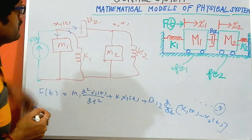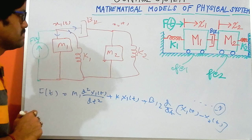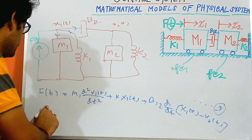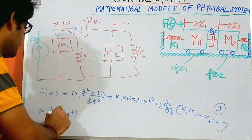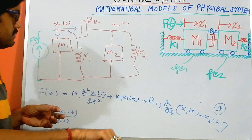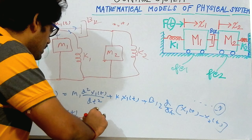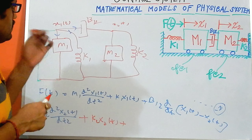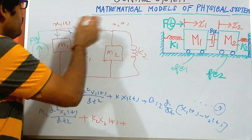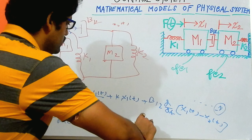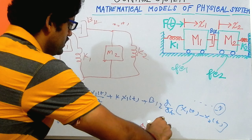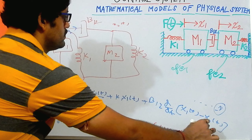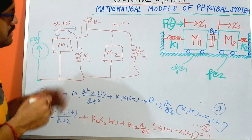Applying the same procedure, at node x2 I have got the equation. The equation is: m2 times d²x2t/dt² plus k2·x2t, and in between the b12, I have got b12 times d/dt of (x2t minus x1t), which is equal to 0. So this is our second equation.